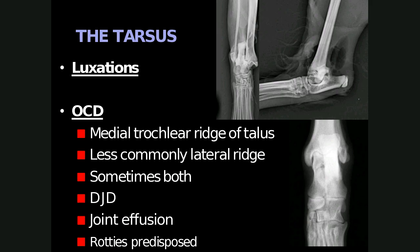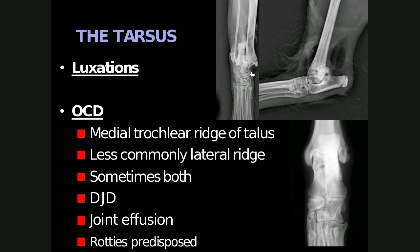The tarsus is quite prone to traumatic luxations. For example, on the top right there is tibiotarsal luxation with proximal and lateral displacement of the distal fragment, as well as an avulsion fracture of the lateral malleolus. There is also a lot of gas within the soft tissue swelling, indicating that this is an open fracture-luxation.